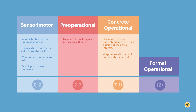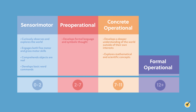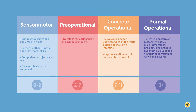Lastly, the child continues to the fourth stage referred to as formal operational. Children twelve and older create a pattern of reasoning to solve multi-dimensional problems and propose hypothetical questions toward the surrounding world and beyond. Examples in this phase include addressing social issues, questioning identity, or presenting concerns for the future matched with viable solutions.